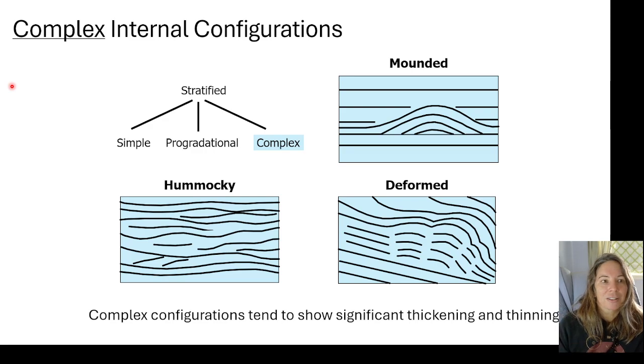So then we've got complex internal configurations. There's a lot more than just these, but we can have mounding, we can have this hummocky texture, or a very deformed texture. Here we've got a mounded, disrupted, deformed pattern. These tend to show more significant thickening and thinning more locally than we see in the more simple internal configurations.